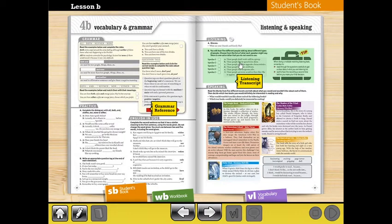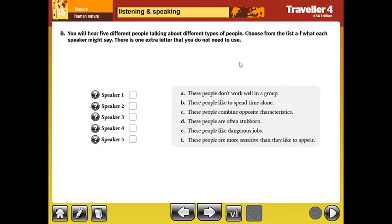Let's begin with the listening task. The listening task here, as you see, you will hear five different people talking about different types of people. Choose from the list, A to F, what each speaker might say. There is one extra answer. Let's begin and listen carefully, please.